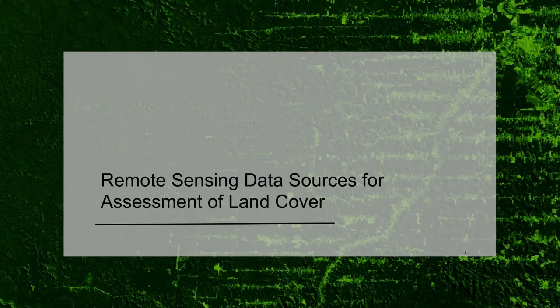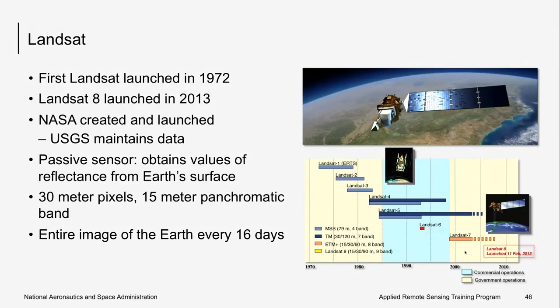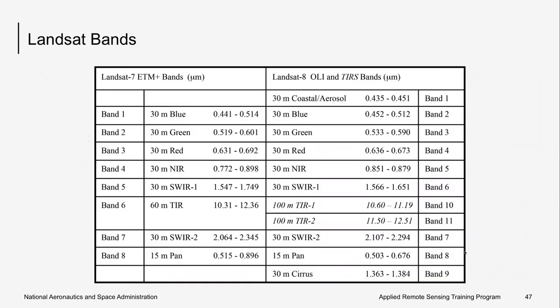Now we'll talk about some more specific satellites relevant to the SDGs. Landsat is probably the most popular satellite, first launched in the 1970s. The data from the early sensors were called MSS, or multispectral scanning imagery. Most recently, Landsat 8 was launched in 2013, and we have continuous data at a fairly high resolution of about 30 meters, which is really useful for examining land surface changes. All of the data are freely available from the USGS, providing imagery of the entire globe every 16 days at a resolution of 30 meters. A table provides an example of each band, the wavelength range, and the spatial resolution, comparing Landsat 4 through 7 on the left and Landsat 8 on the right.